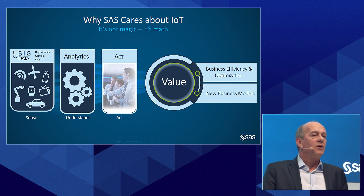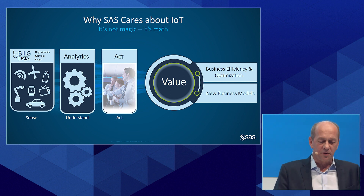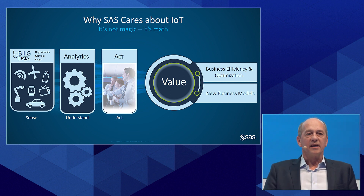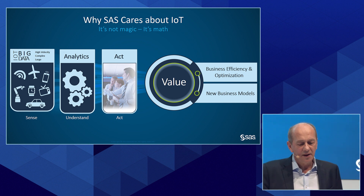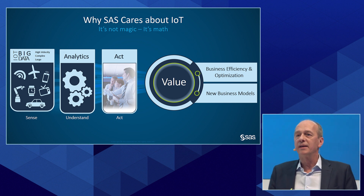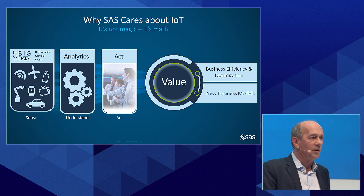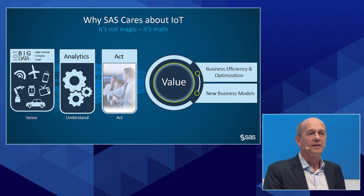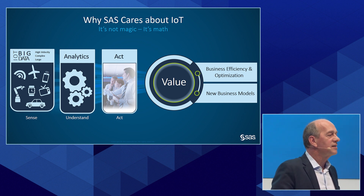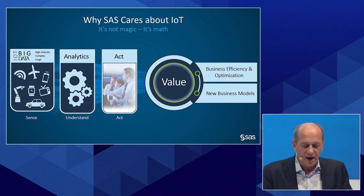With IoT, on one side we have the big data — all the sensors producing data. Analytics is there so that you understand all the data you are producing. And if you understand the data, you can start to act, you can make decisions on top of it. Having big data coming in, you need to create value on top of it. Otherwise it makes no sense to have decisions in place that are not even leading you to smarter outcomes.